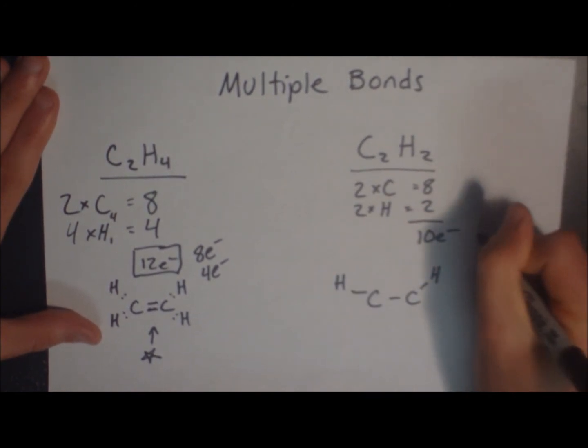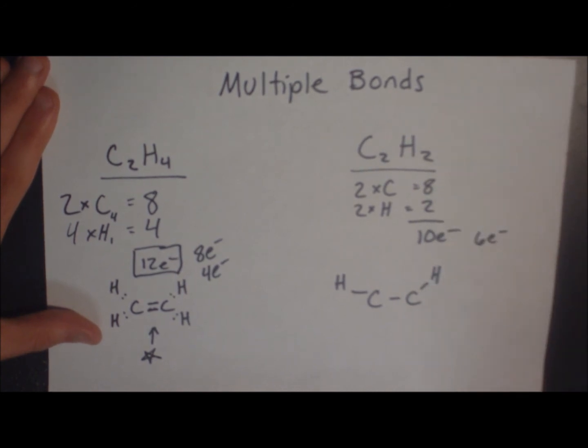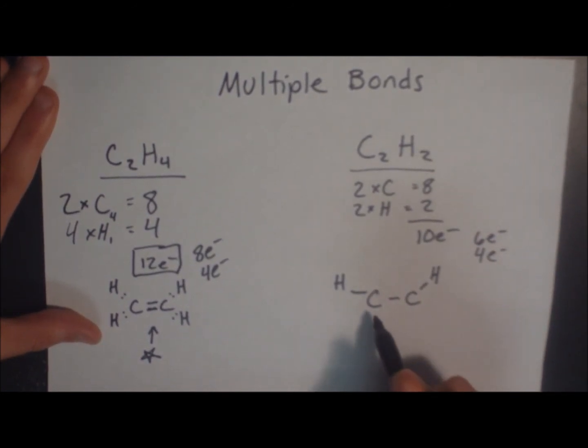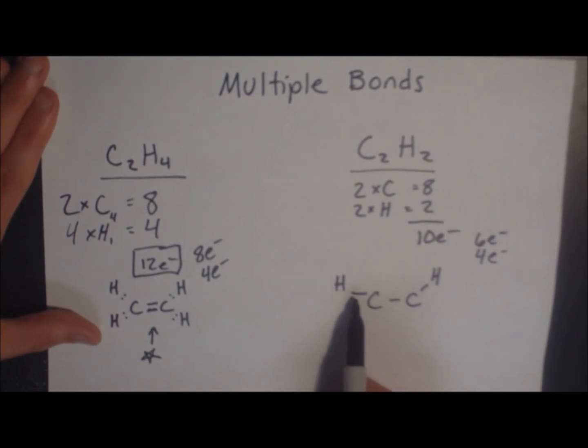Total, right now, we've used 6 electrons, which means we have 4 electrons to go. So each carbon, as it's drawn right now, has 1, 2, 3, 4 electrons.